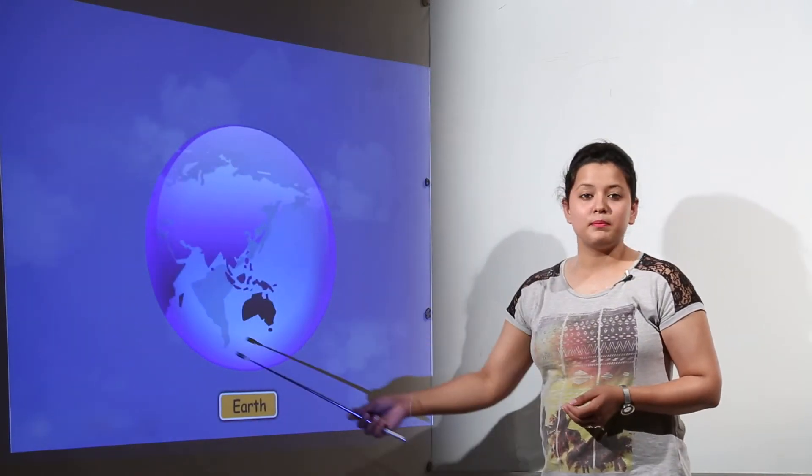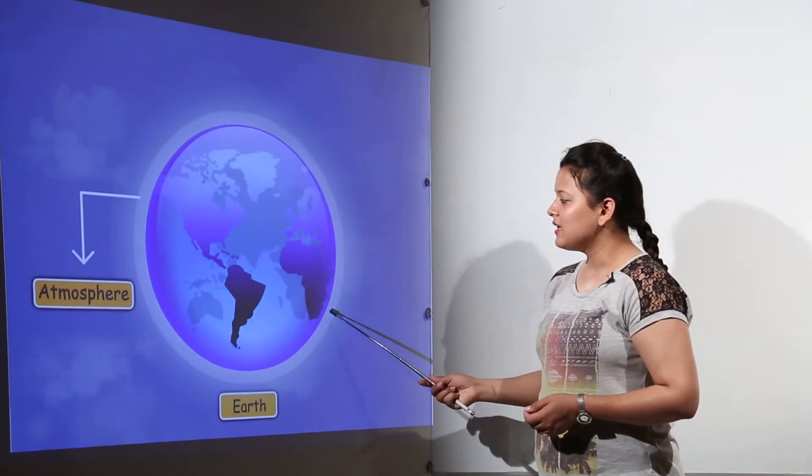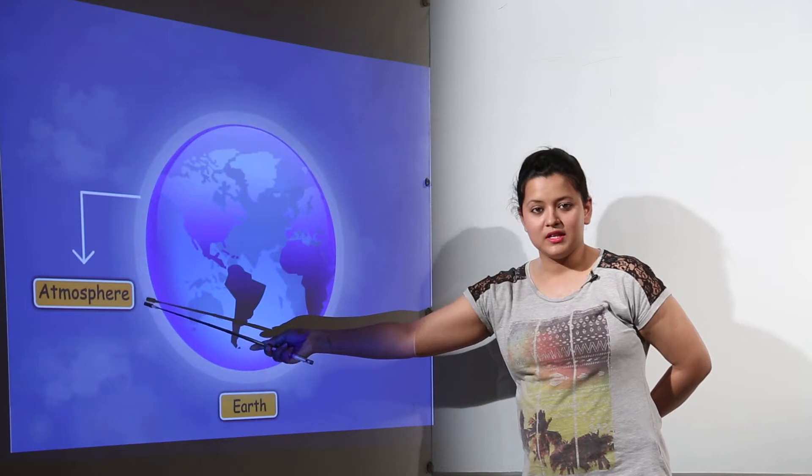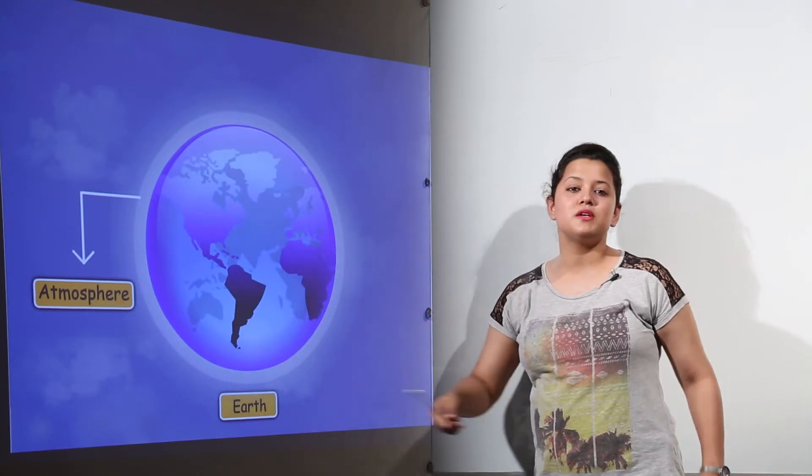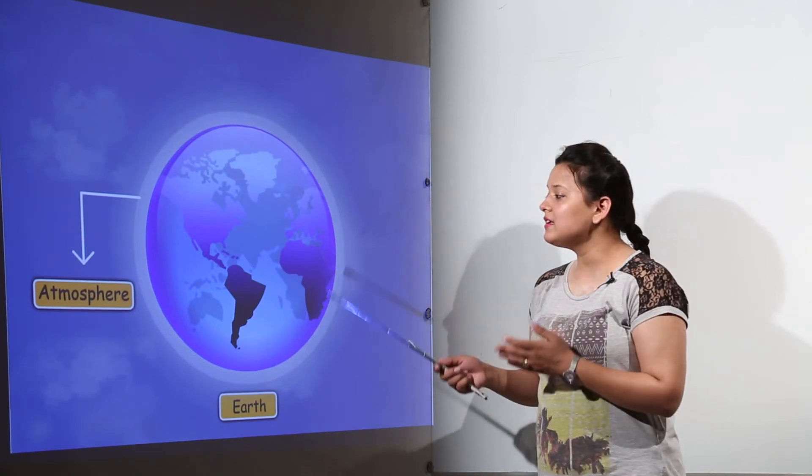The earth, that is our planet, has a layer of few kilometers around it. That layer is the atmosphere. This atmosphere contains the mixture of gases, mixture of so many gases together that is containing the air.